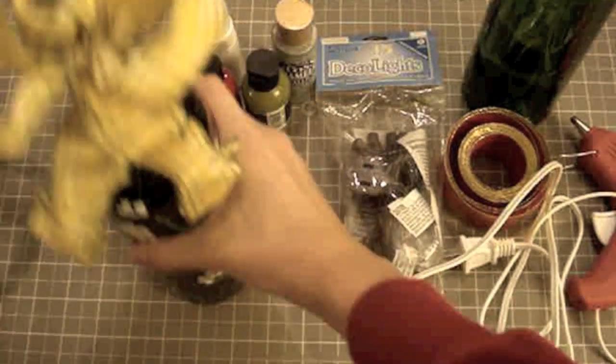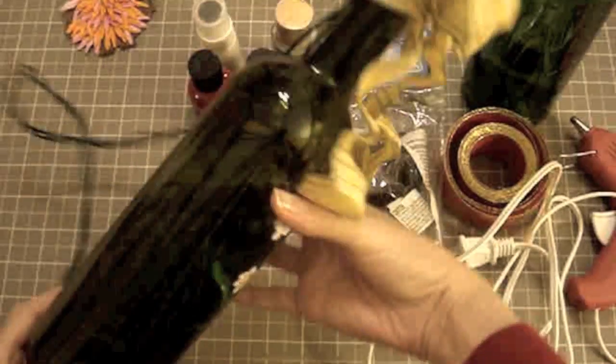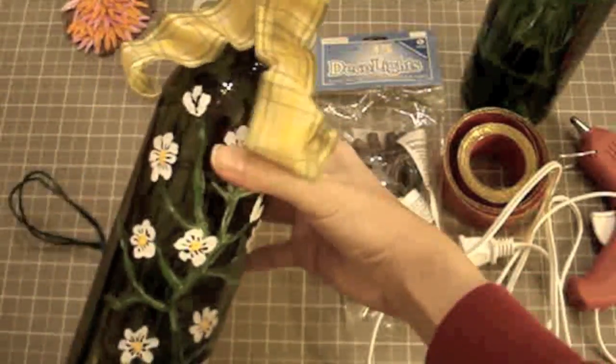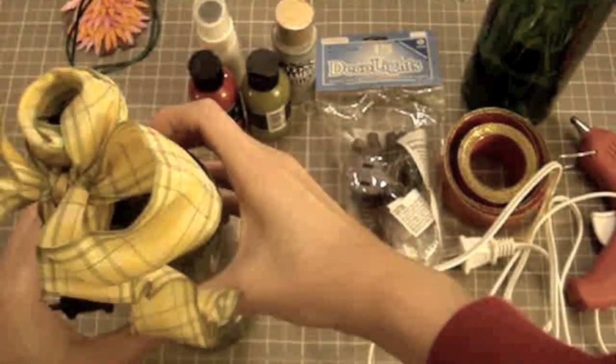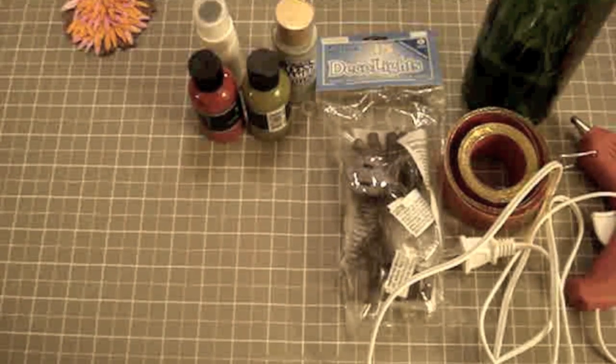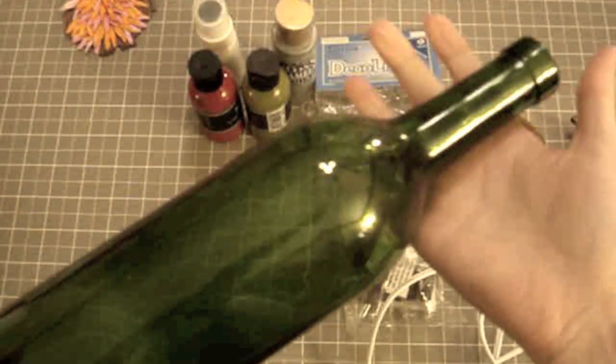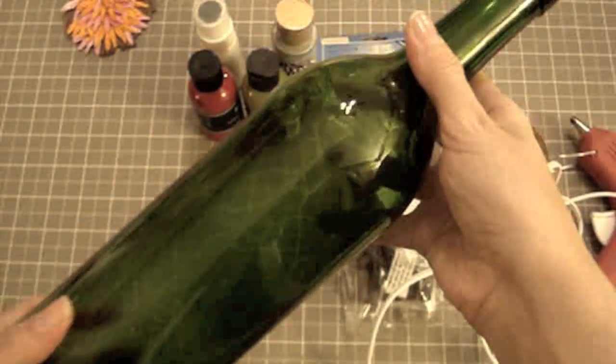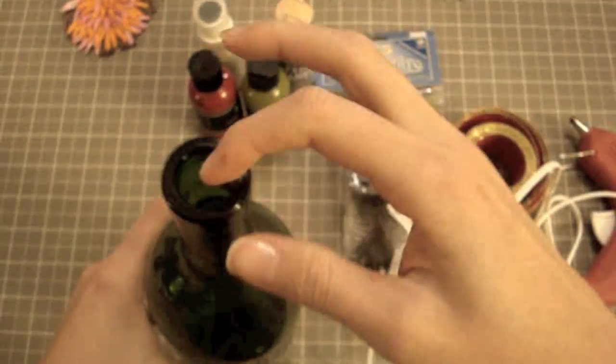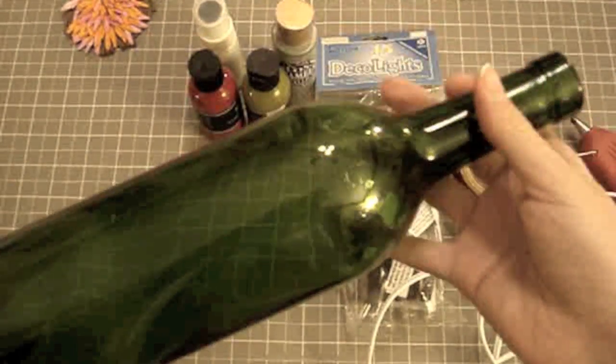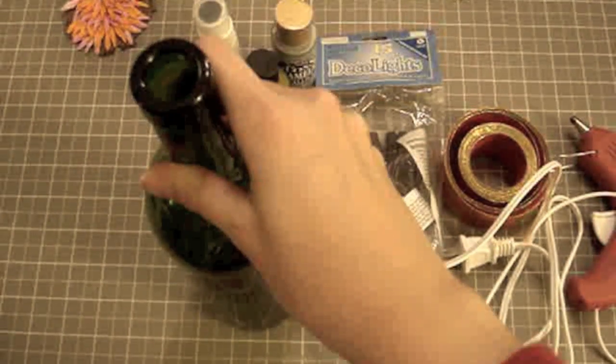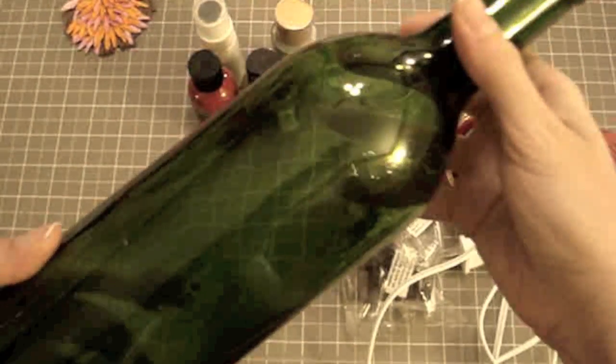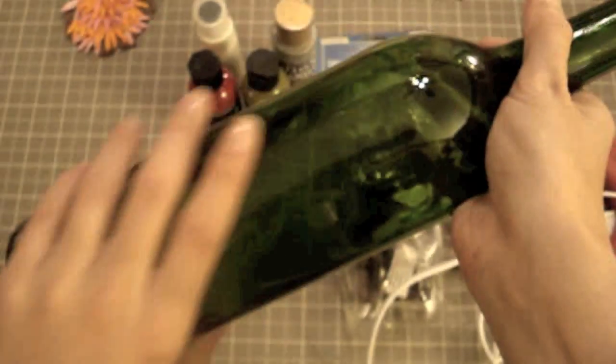What you're going to need to make this lamp is just a few things. You need an empty wine bottle. If it has any labels on here you're going to take them off, wash it really well on the inside, and then let it air dry. You want to make sure that the surface is as smooth as you can have it so when you paint it, it will look nice.